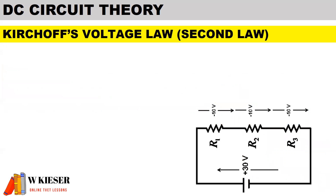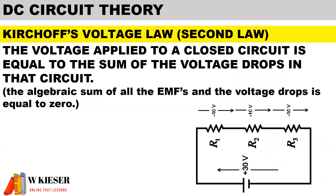For Kirchhoff's Voltage Law, which is our second law, the voltage applied to a closed circuit is equal to the sum of the voltage drops in that circuit. In other words, the algebraic sum of all the EMFs and the voltage drops is equal to zero.